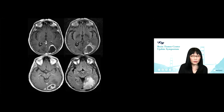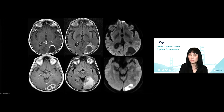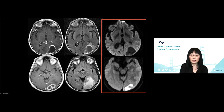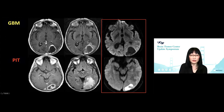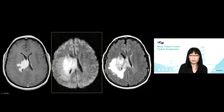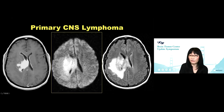Two different patients, very similar looking on post-contrast and FLAIR. Once you add DWI, there's no mystery: the patient at the top has glioblastoma, the patient at the bottom has an intracranial abscess. How about this patient? Post-contrast, FLAIR, diffusion is homogeneously reduced — this is a primary CNS lymphoma.